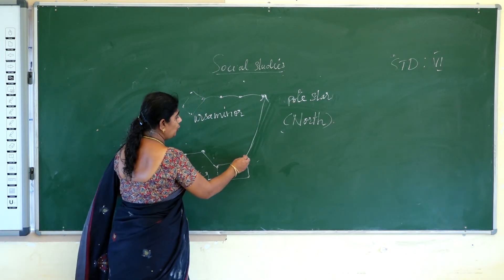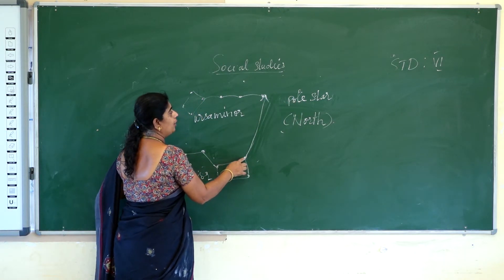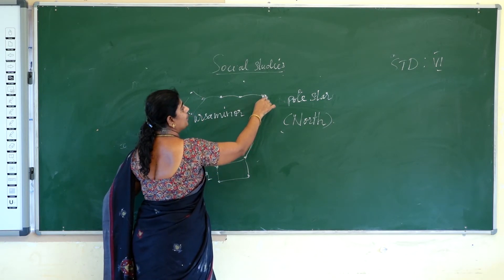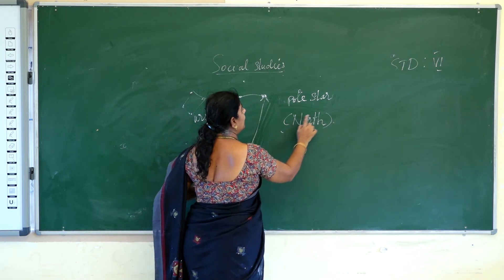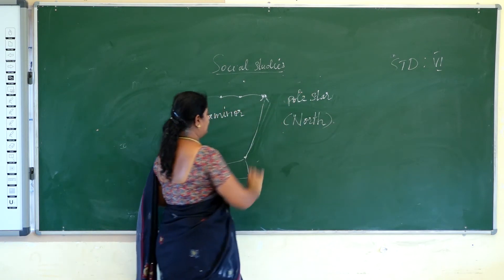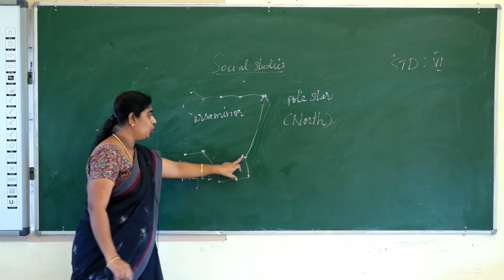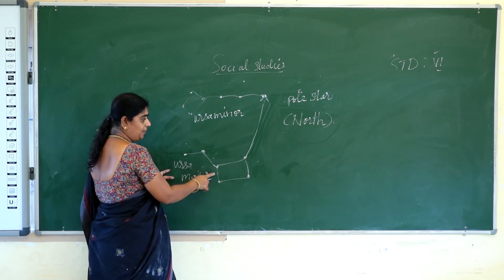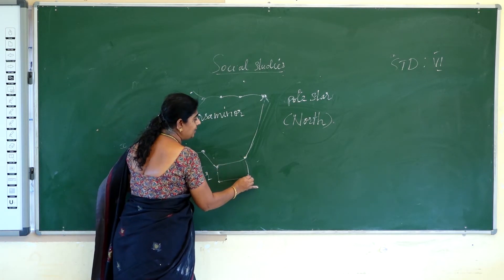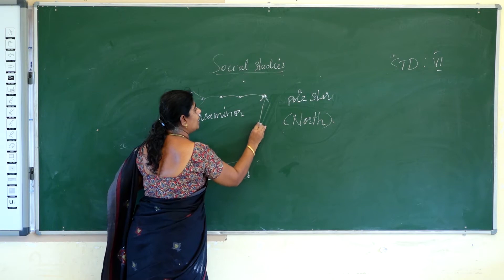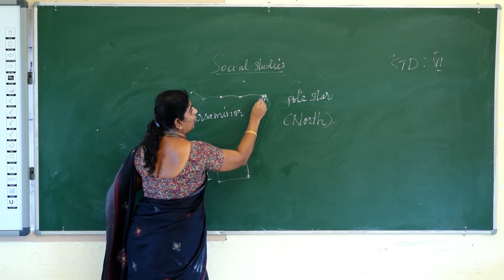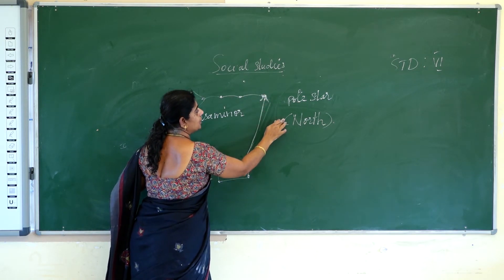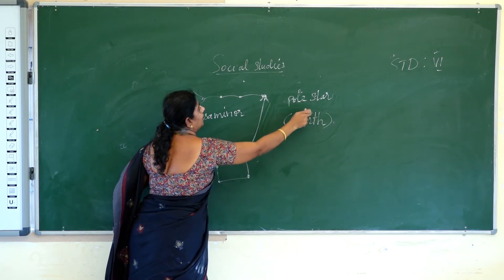The two front points of the Sapta Rishi, extended towards the Pole Star, show the direction of the North.